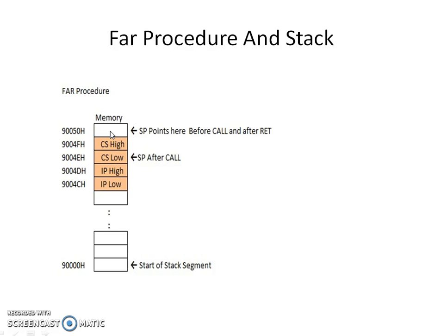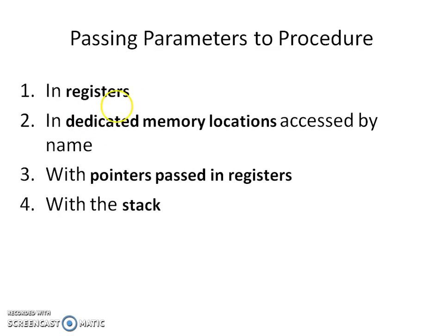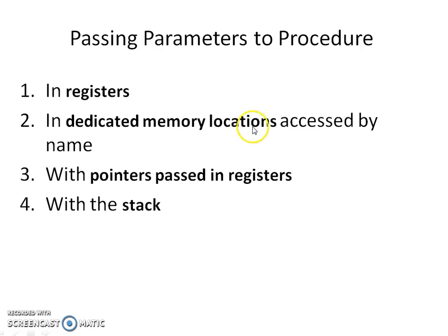You can pass parameters to a procedure using registers, dedicated memory locations, pointers passed in registers, or the stack. When you want to pass a larger number of parameters, you can use pointers. For a limited number of operands, use registers since register size is limited. Dedicated memory locations have the drawback that changes to those locations are reflected back in the mainline program. Depending on the scenario, you can choose one of these ways to pass parameters.